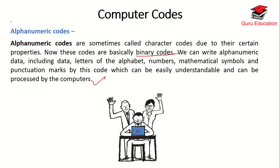Alphanumeric meaning is the combination of characters plus numeric. This is the combination. In this case, we will talk about alphanumeric — including symbols such as mathematical symbols, punctuation marks, hash, at the rate, etc. We will talk about the symbols which we can easily understand.